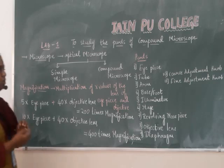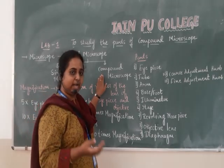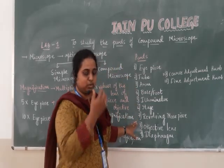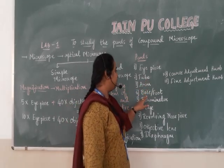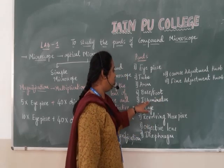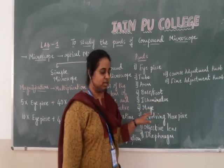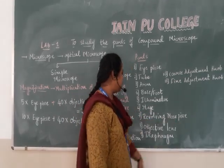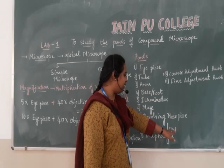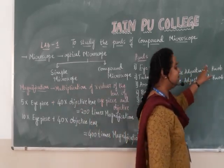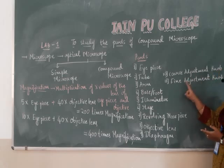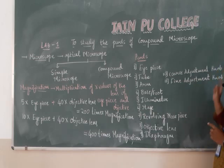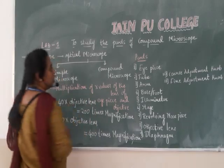Coming to the parts of the compound microscope: eye piece, tube (also termed as body tube), arm, base or foot of the microscope, illuminator (also referred to as condenser), stage, revolving nose piece, objective lenses, diaphragm, and adjustment knobs. There are two knobs in the compound microscope — the coarse adjustment knob (also termed as rough adjustment knob) and the fine adjustment knob.